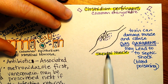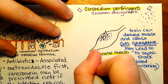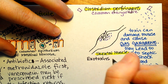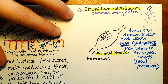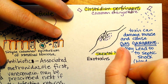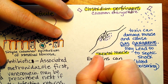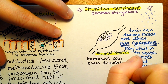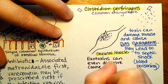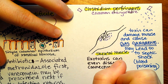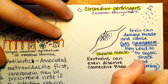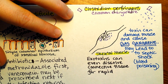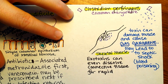What these exotoxins can also do is dissolve the connective tissue, so they can move through the tissue. If that spread does reach the blood, that's where blood poisoning could develop.